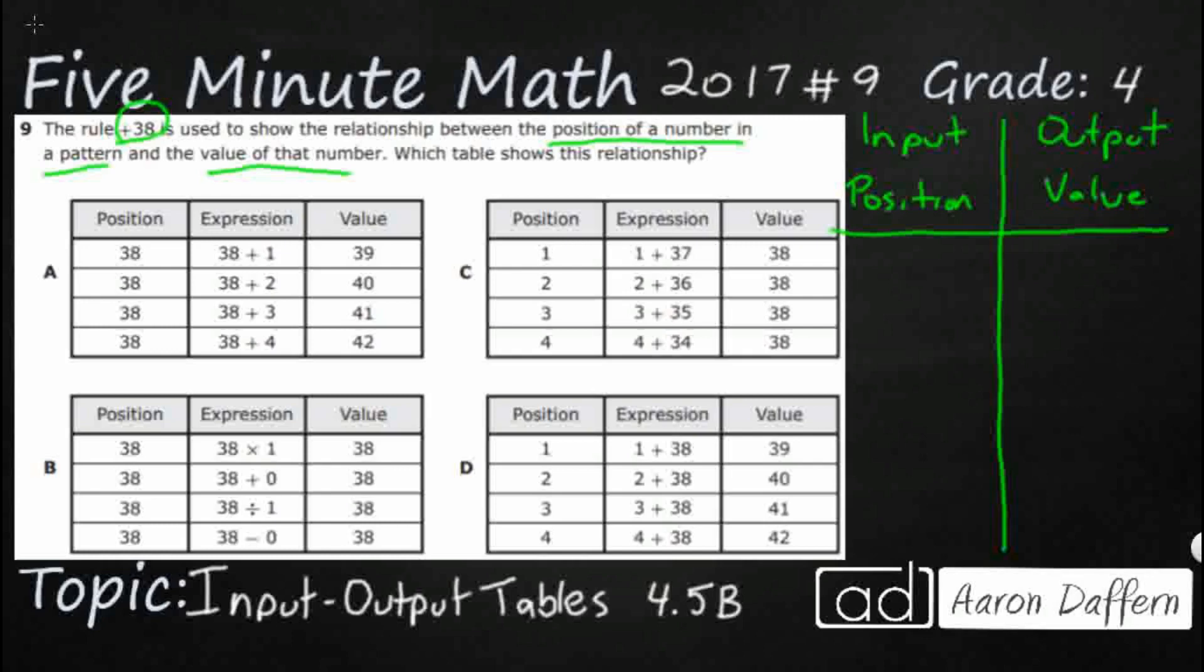Let's start with 1, 2, 3, 4, and then we can try the 38s and see which of those work. Actually, we wouldn't need all four 38s. Let's just do 38 down there at the bottom. They give us the rule, plus 38.